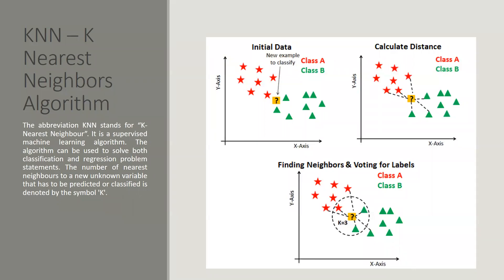Hi everyone, in this video we will learn KNN, which stands for K Nearest Neighbors algorithm. We will learn where to use KNN and how to run it in Python. KNN is a supervised machine learning algorithm that can be used to solve both classification and regression problems. The number of nearest neighbors to a new unknown variable that has to be predicted or classified is denoted by the symbol K.